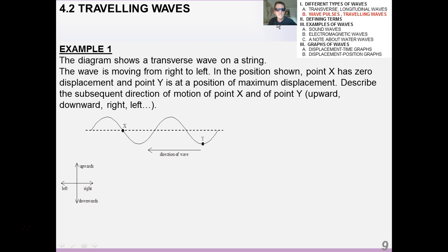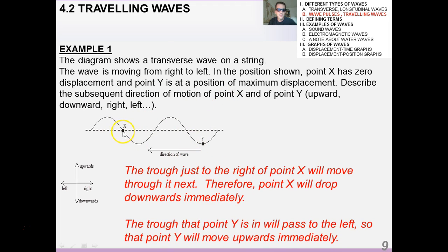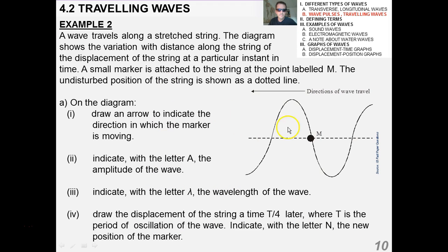Here's the first example, pretty simple one. Diagram shows a transverse wave on a string, it's going from right to left. And the question is asking you to talk about the subsequent direction of motion, or the motion right after this picture was taken, of point X and point Y. So, point X will actually drop down towards this trough immediately, and point Y will actually move up towards this next crest immediately. And we've gone through that in class. Second example, go ahead and pause the video and try this one on your own.